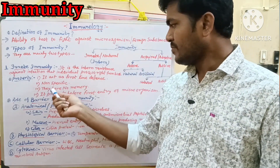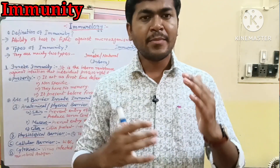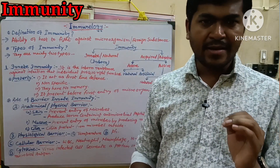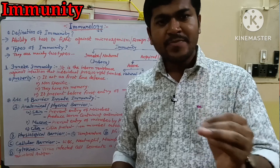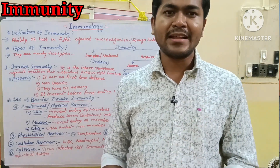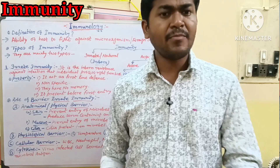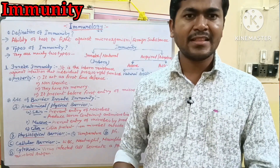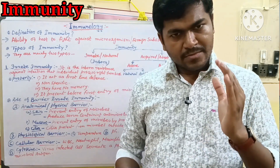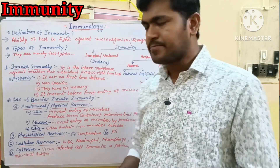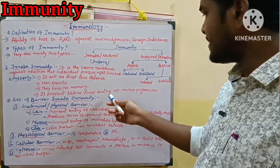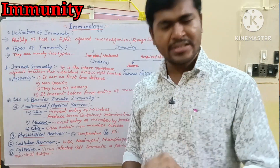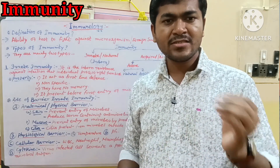Innate immunity has no memory. Acquired immunity, by contrast, does have memory — the next time a microbe attacks, the immune system can recognize and respond to it.